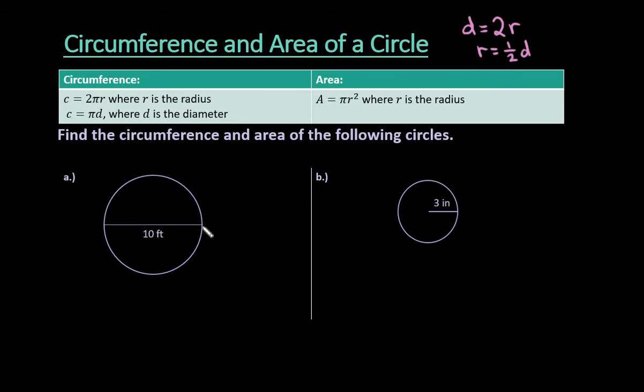So if you're given the diameter, it doesn't make a whole lot of sense to take half of it and then turn around and multiply it by 2. It's just easier to use the second formula. For area, area is pi r squared, where r is the radius. So you do have to find the radius if you're given the diameter in order to find the area.